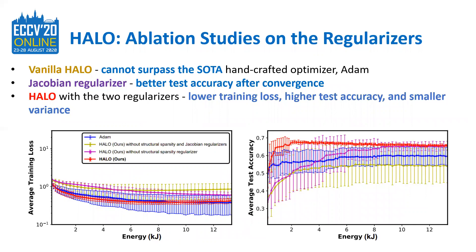For the ablation study on the two regularizers, we find that vanilla HALO without the two regularizers cannot surpass Adam. After adding the Jacobi Regularizer, HALO could achieve better test accuracy after convergence, which matches the Jacobi Regularizer's goal of faster and better adaptation. And HALO with both regularizers achieves lower training loss and higher test accuracy while having smaller variance in the same energy budget compared to all baselines, proving that the two regularizers integrated into HALO not only enable faster adaptation with reduced energy costs, but also offer a bonus benefit of improving convergence stability.